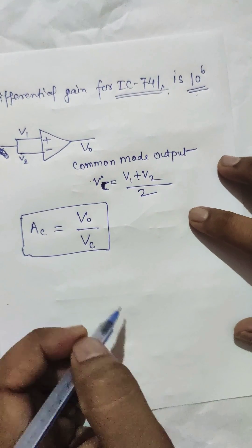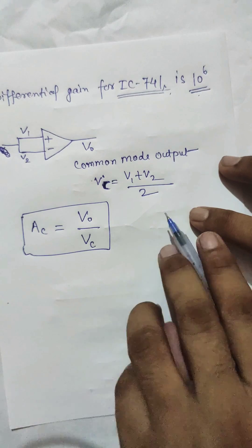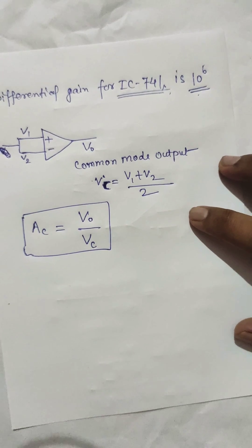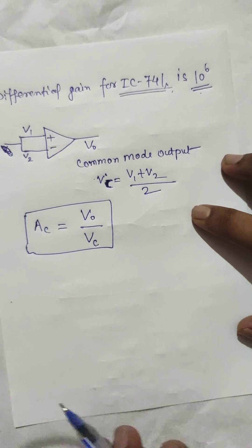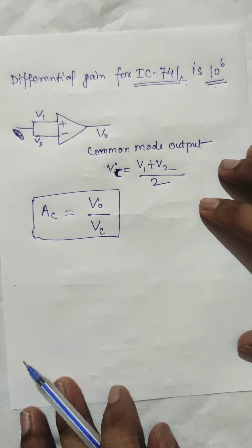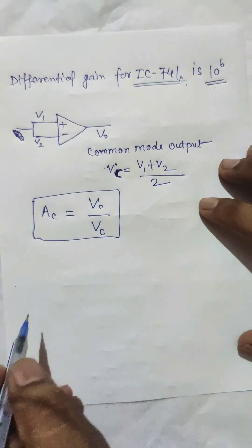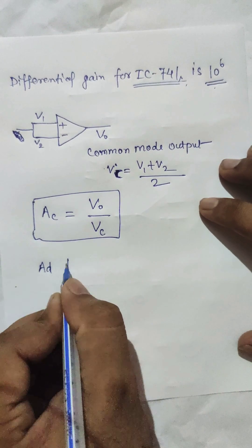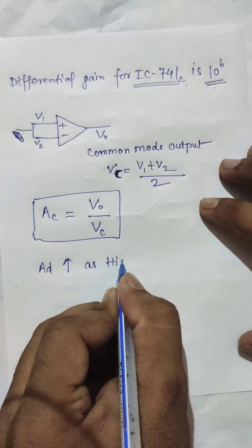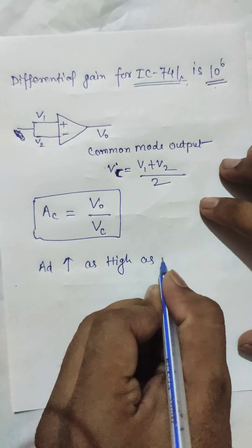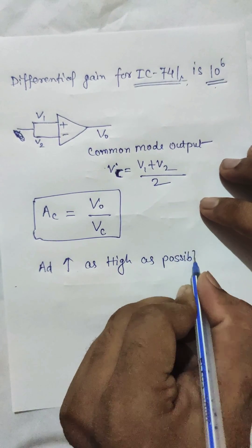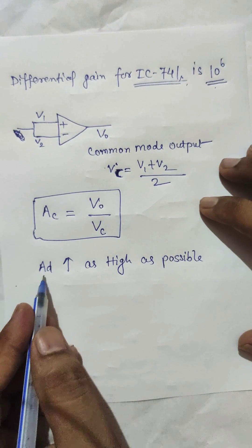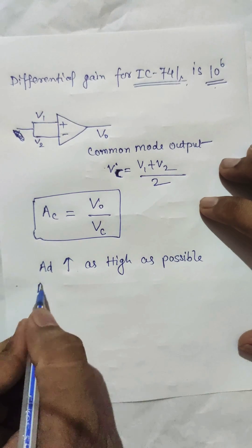These are two kinds of gain available in an operational amplifier. What is expected is that differential gain should be as high as possible. The designer of an operational amplifier should try to increase differential gain as high as possible and common mode gain as low as possible.